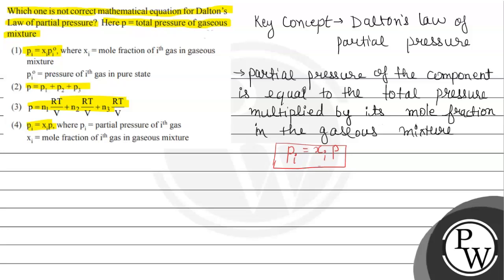Now let us discuss more about Dalton's law of partial pressure. Let us say we have a mixture of gases: gas A, gas B, gas C, and gas D. In this mixture, the total pressure will be equal to the sum of the pressures of each gas, so it will be PA plus PB plus PC plus PD.